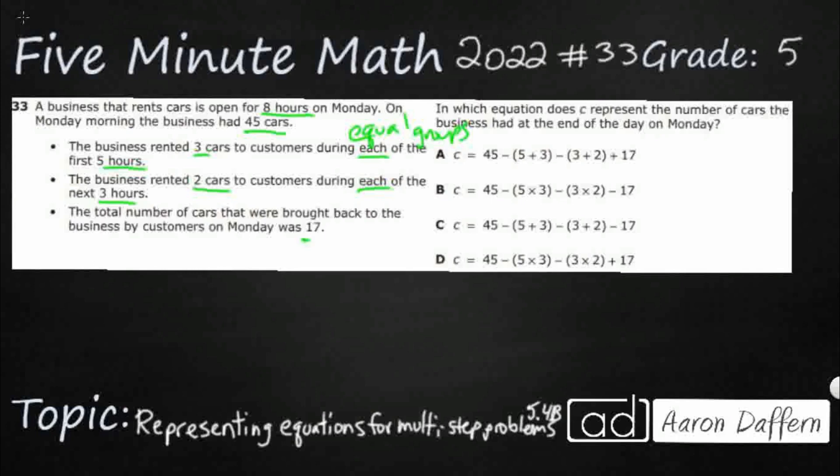So we need to find an equation that represents the number of cars the business had at the end of the day. That's interesting. So on Monday morning, let's go back to our problem here. On Monday morning, we had 45 cars. Okay, so that's our start. Start: 45 cars.